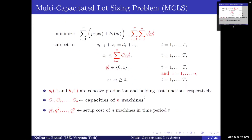We are interested in a generalization of the CLSP, where instead of just one machine, we have n machines of different capacities, and each machine has a setup cost of Q1t. More specifically, the production capacity now is the sum of binary multiples of available capacities. We refer to this problem as MCLS, or the multi-capacitated lot sizing problem.